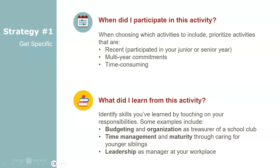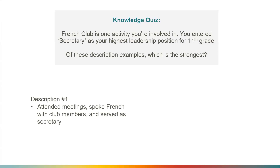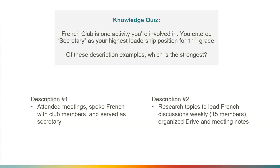Another strategy is to highlight what you've learned. Focusing on the skills you've gained from an activity is a great way to be more specific and go beyond a typical activity description. Remember that soft or hard skills — something like maturity or empathetic leadership — can be just as valuable as budgeting skills, for example. Now we're going to test your knowledge with two activity descriptions, and I want you to tell me which would be the strongest.